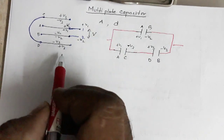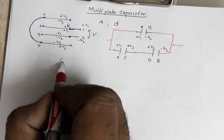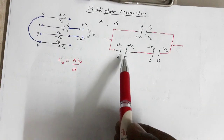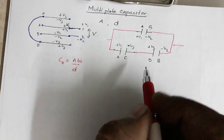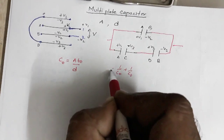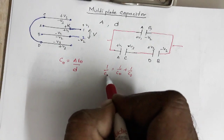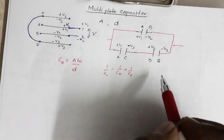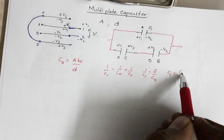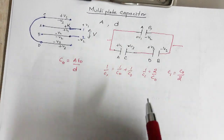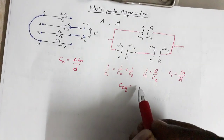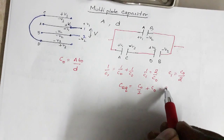Since each plate has area A and plate separation D, the capacitance of one pair is C0 = Aε₀/D. The two series capacitors give 1/C1 = 1/C0 + 1/C0 = 2/C0, so C1 = C0/2. This series combination is in parallel with the third capacitor, also C0, so the equivalent capacitance is C0/2 + C0 = 3C0/2.